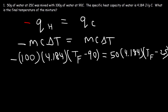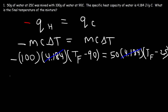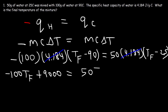The first thing we should do is divide both sides by 4.184 to cancel those two terms. Next, distribute negative 100 to tf minus 90: that gives negative 100 times tf, and negative 100 times negative 90, which is positive 9,000. On the right, this is going to be 50 times tf, and 50 times negative 25 is negative 1,250.